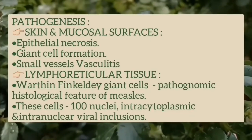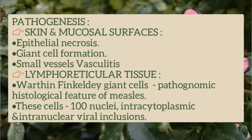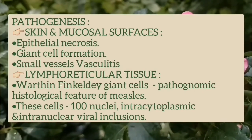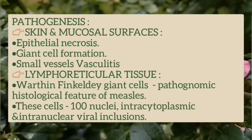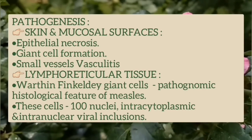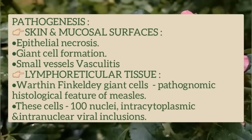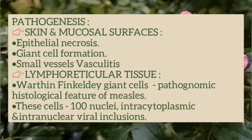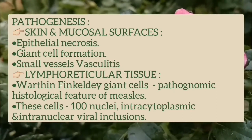In skin and mucosal surfaces, the virus causes epithelial necrosis, giant cell formation, and small vessel vasculitis. While in lymphoreticular tissue, it forms Warthin-Finkeldey giant cells which are pathognomonic histological features of measles. These cells include up to 100 nuclei and contain intracytoplasmic and intranuclear viral inclusions.